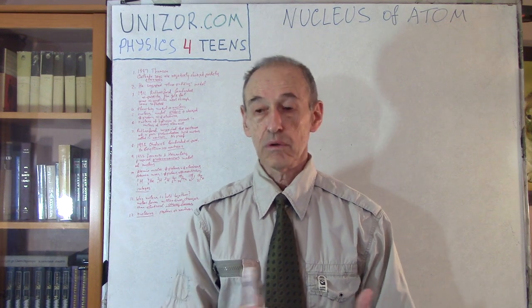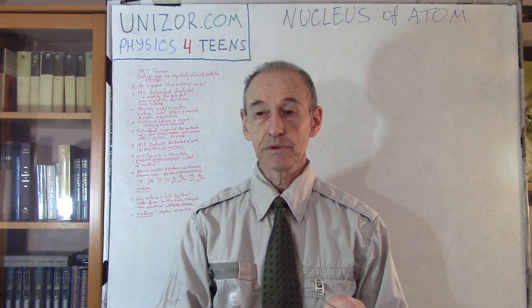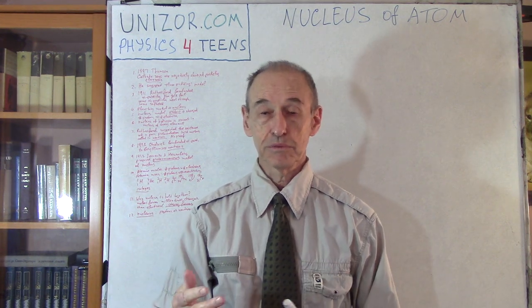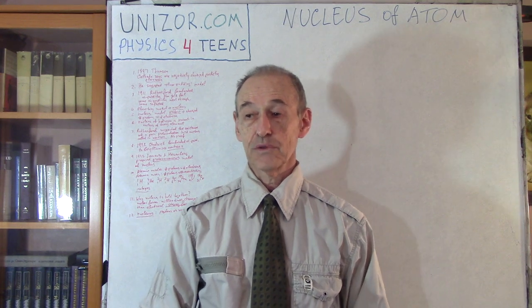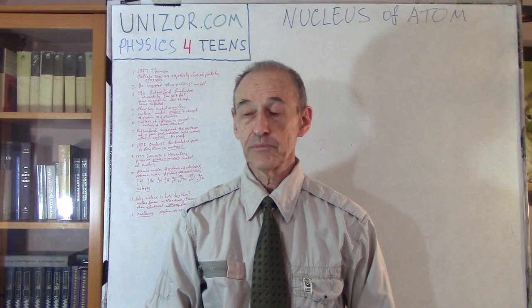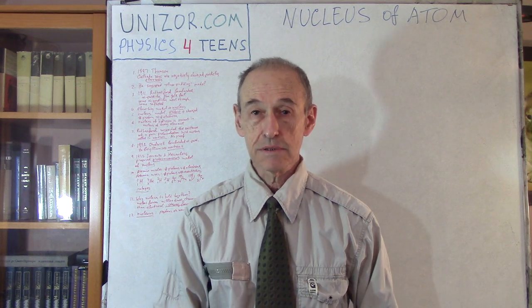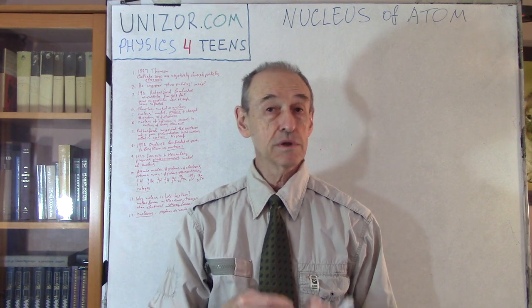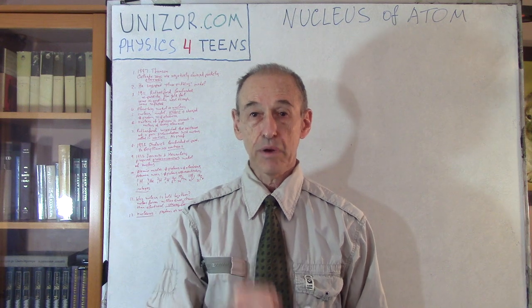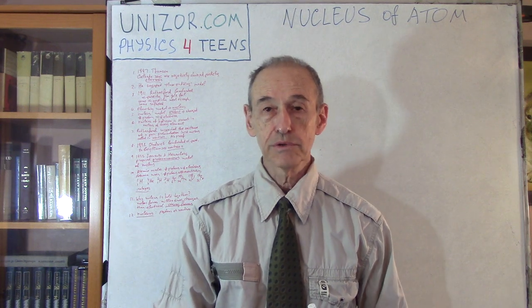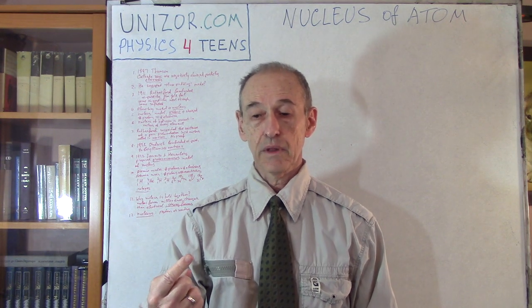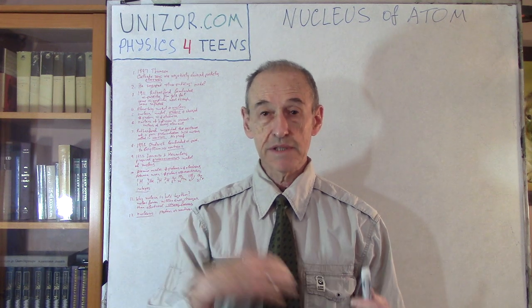He was able to judge how many particles went through and how many were reflected back. That gave them some idea about how much geometrical space is occupied by the nucleus and how much is empty. So he came up with the idea that the atom is practically empty — there is a very, very small nucleus and some electrons circulating around it. That was his hypothesis: the planetary model. In between, there is basically empty space.